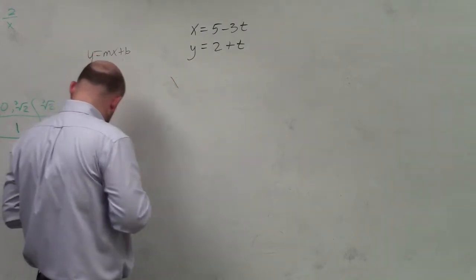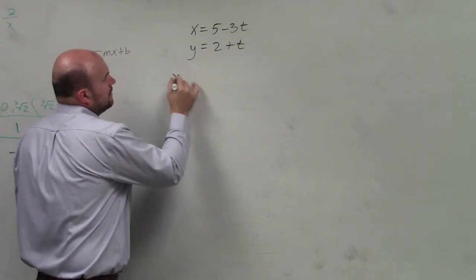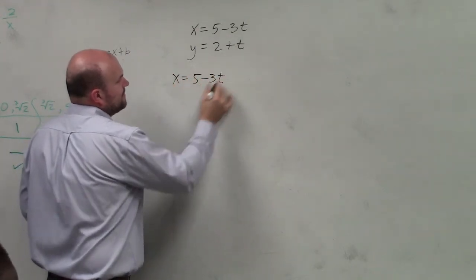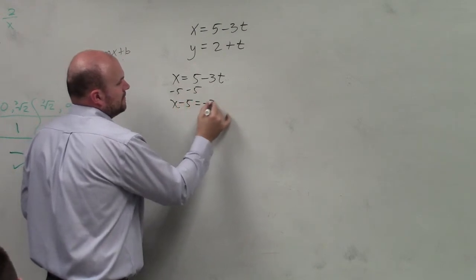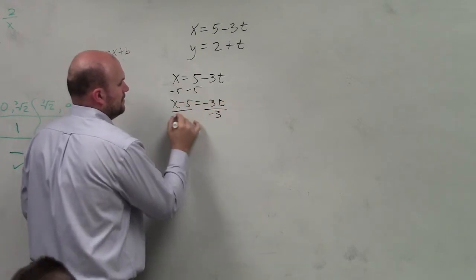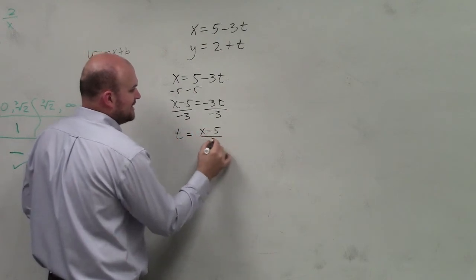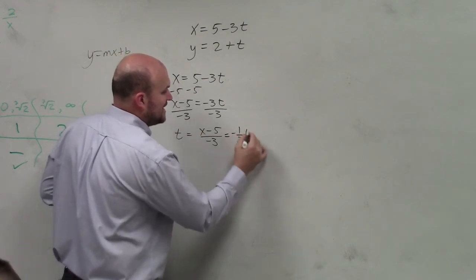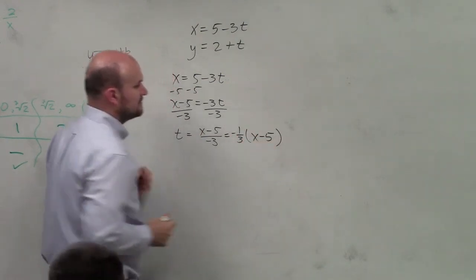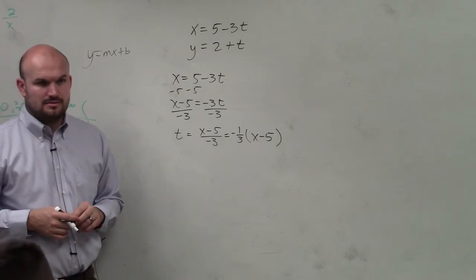So I have x equals 5 minus 3t. Solving for t, I have t equals x minus 5 divided by negative 3, which is the same thing as negative one-third times x minus 5. Do you guys agree with me on that?